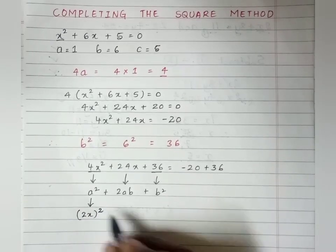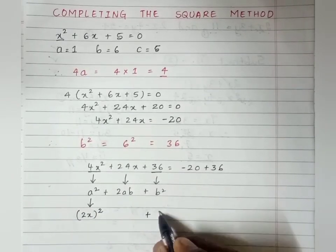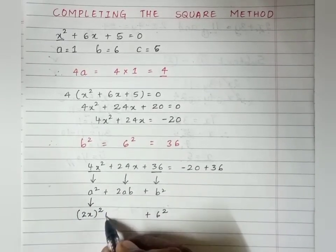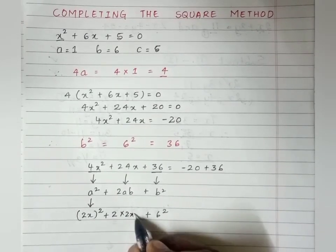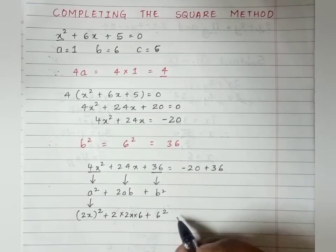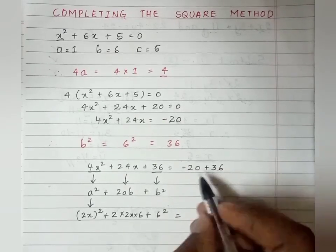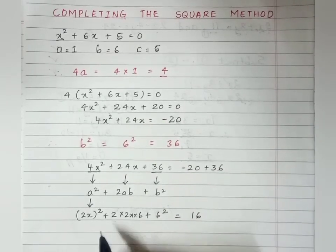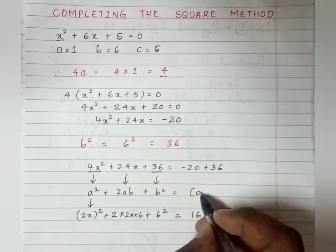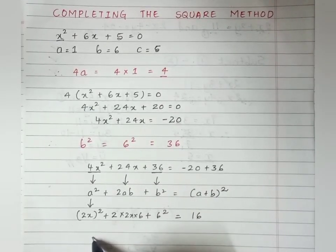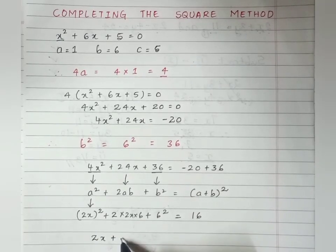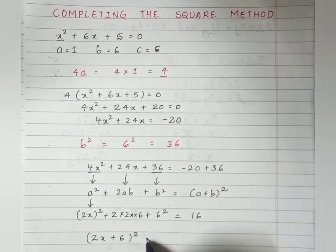We write 4x² as (2x)², and 36 as 6². Then 2ab = 2 × 2x × 6. And -20 + 36 = 16. So a² + 2ab + b² can be written as (a + b)², giving us (2x + 6)² = 16.